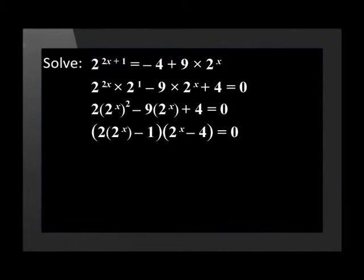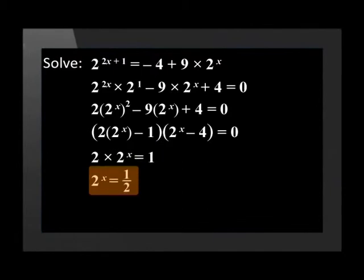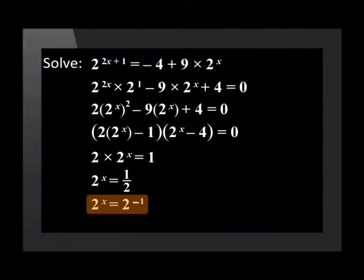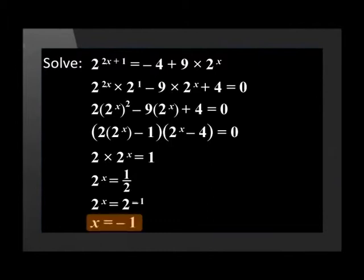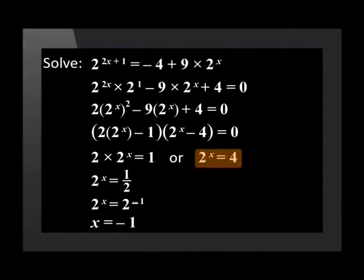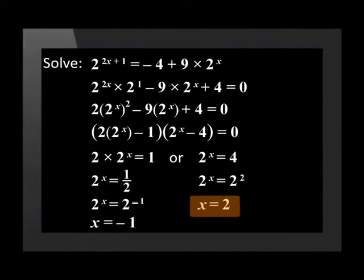Now we solve each bracket. The first bracket gives us 2 times 2 to the power of x is equal to 1, so 2 to the power of x is equal to a half. If we bring 2 to the top it becomes 2 to the power of negative 1. The bases are the same, so x is equal to negative 1. For the second bracket, 2 to the power of x equals 4, which gives us 2 to the power of x equals 2 squared, meaning x is equal to 2.